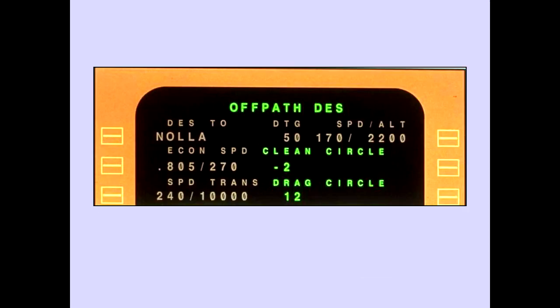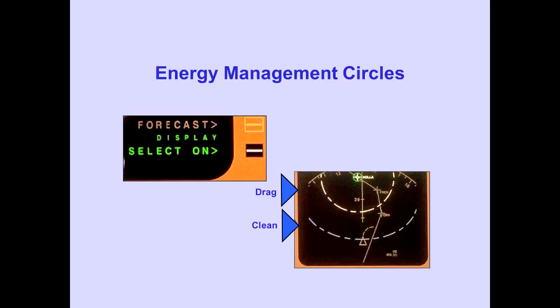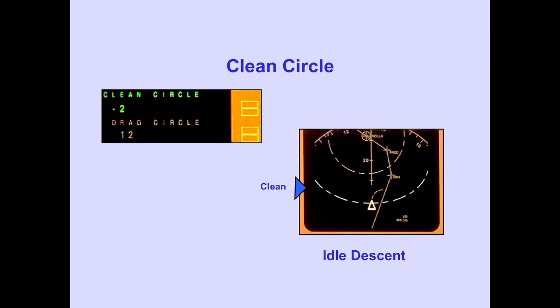The clean and drag energy management circles are displayed on the off-path descent page. Using the display line select key displays the clean and drag energy management circles for an idle descent on the navigation display; a second push removes the energy management circle display. The clean circle line displays the distance from the current position to the clean energy management circle. Prior to passing the clean circle line, an idle descent can be made to attain the altitude associated with the descent-to waypoint. In the example, the airplane is two miles past the clean circle line.